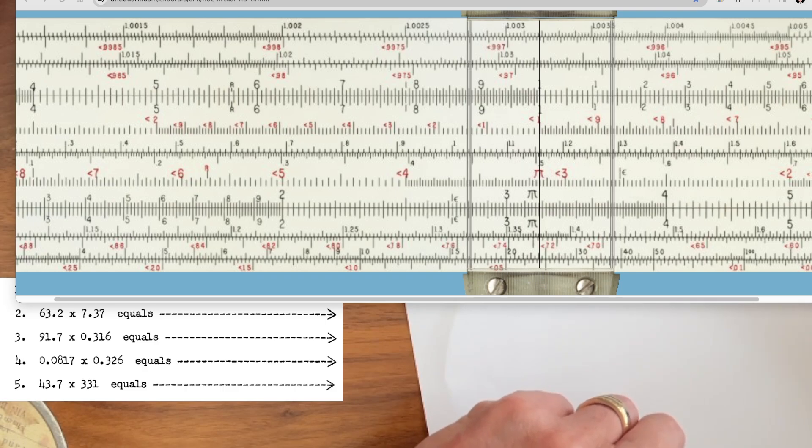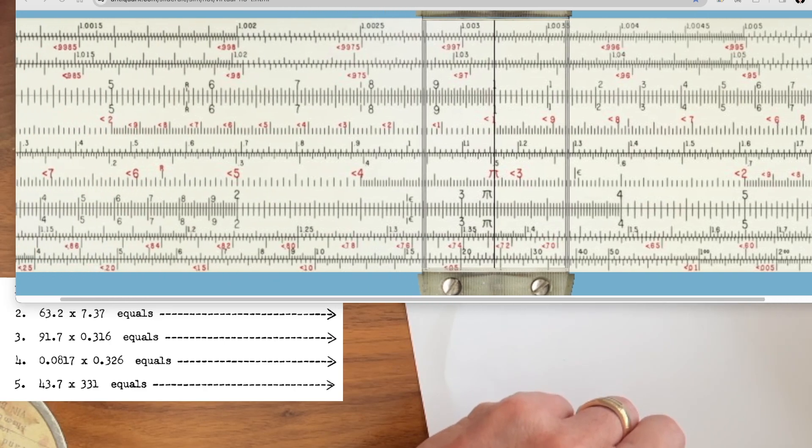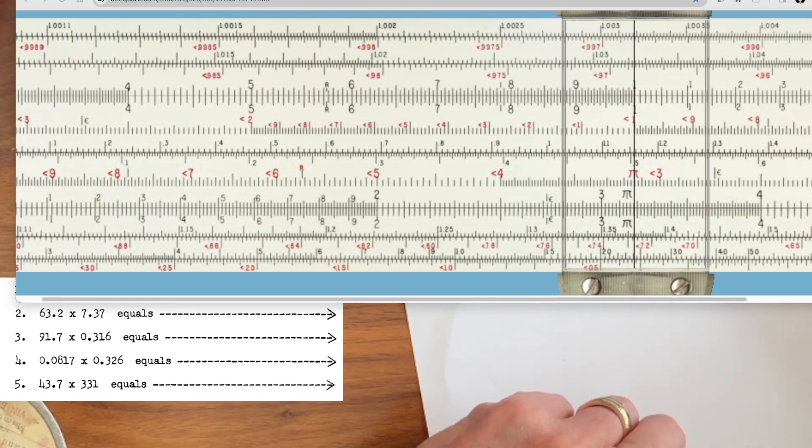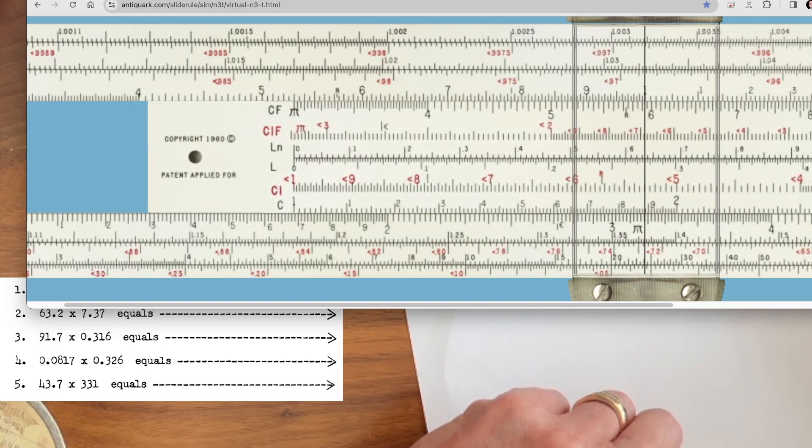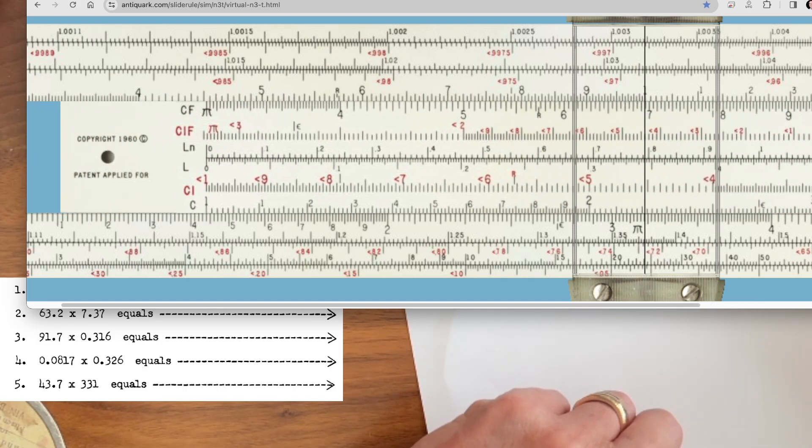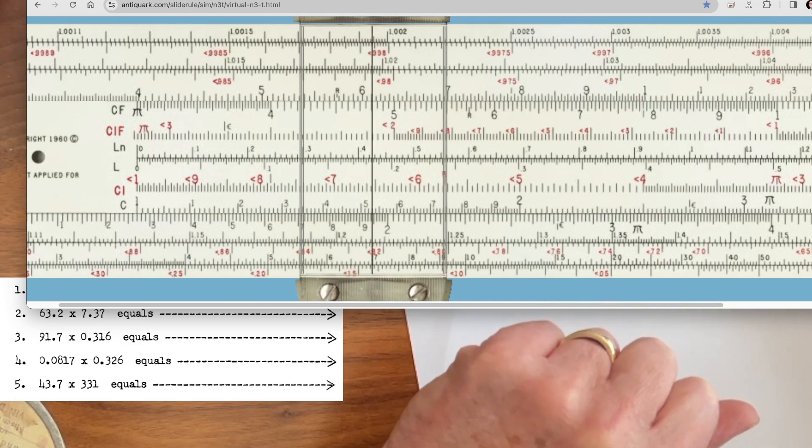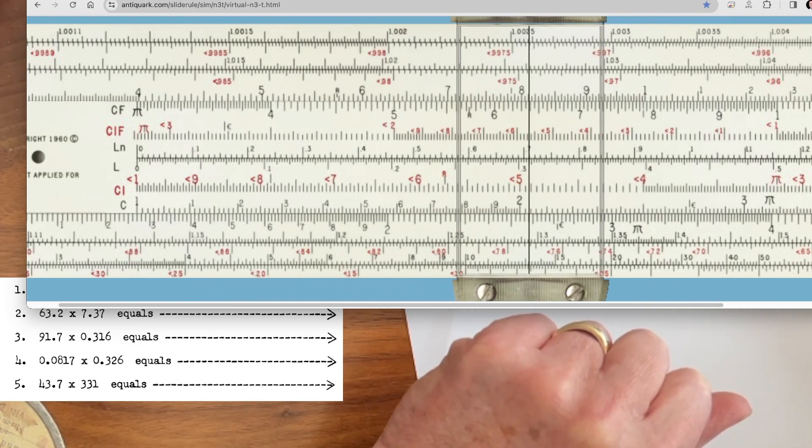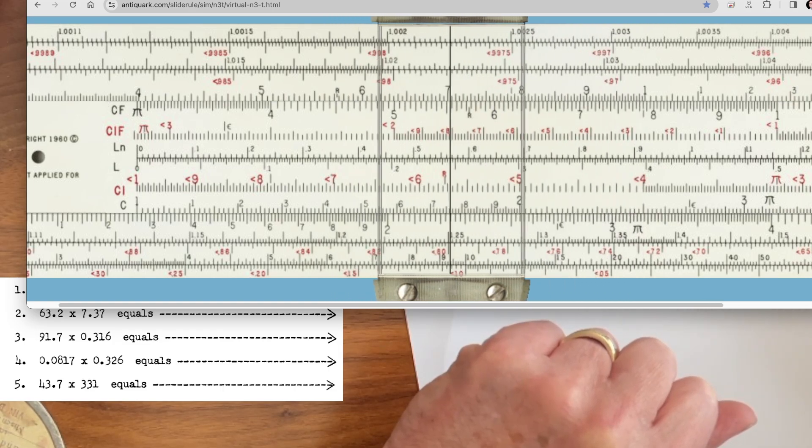Now, to move the slide rule back and forth, just go ahead and put your cursor on one of the stators and move it back and forth like so. To move the slide itself, put your cursor on the slide, hold down the left mouse button, and move the slide back and forth. And then finally, to move the cursor, the same procedure as the slide, except put your mouse right on the cursor itself, and just move it back and forth.